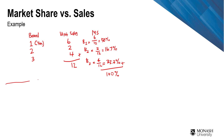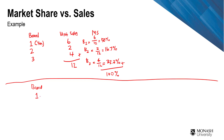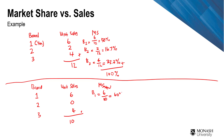Now say that brand two has exited the market — for some reason, brand two is no longer serving the market. Brand one still maintains six sales, brand two has zero, and brand three still keeps four, making the total 10. So brand one's new market share is six out of 10, which is 60% — up from 50%. Brand three also increases to four out of 10, or 40%.